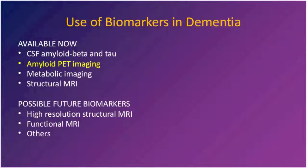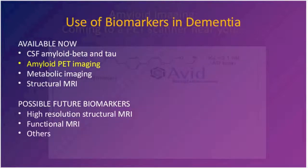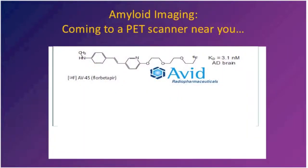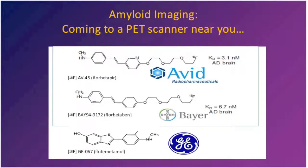Amyloid PET imaging is a technology that is newer in clinical practice, becoming FDA approved in April of 2012. The currently FDA-approved compound is AV-45, also called florbetapir, with the brand name Amyvid. Two other compounds — one by Bayer and one by GE — will probably achieve FDA approval in the coming months to a year.